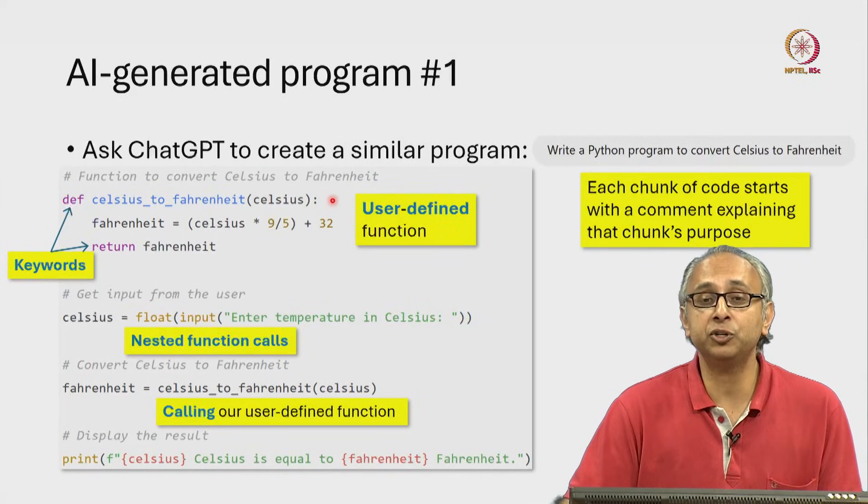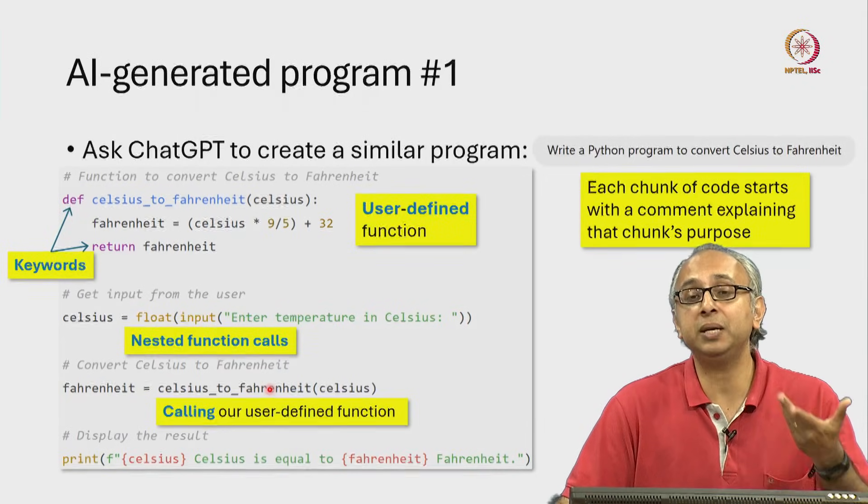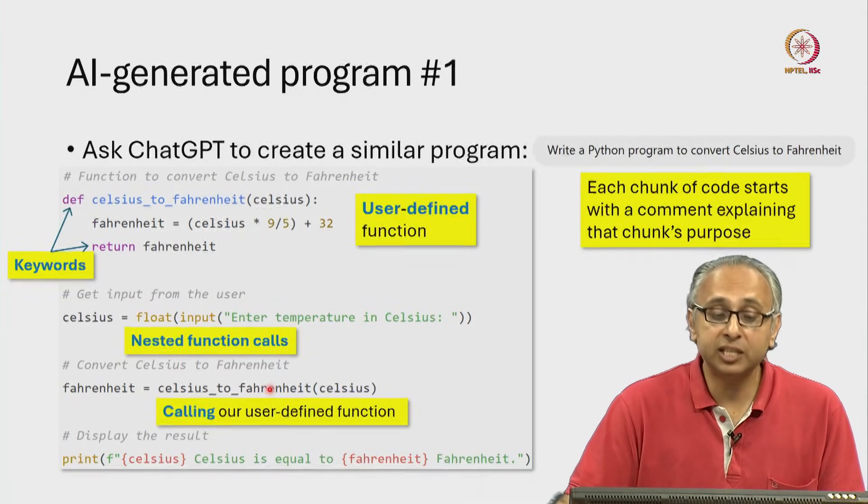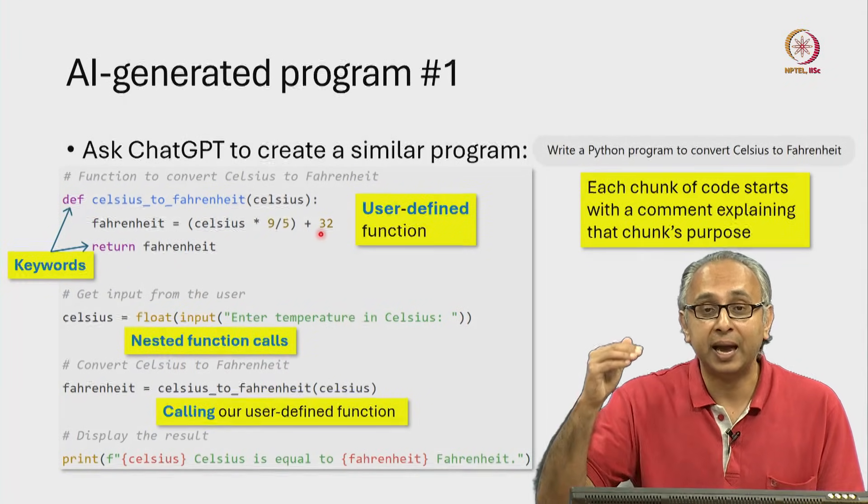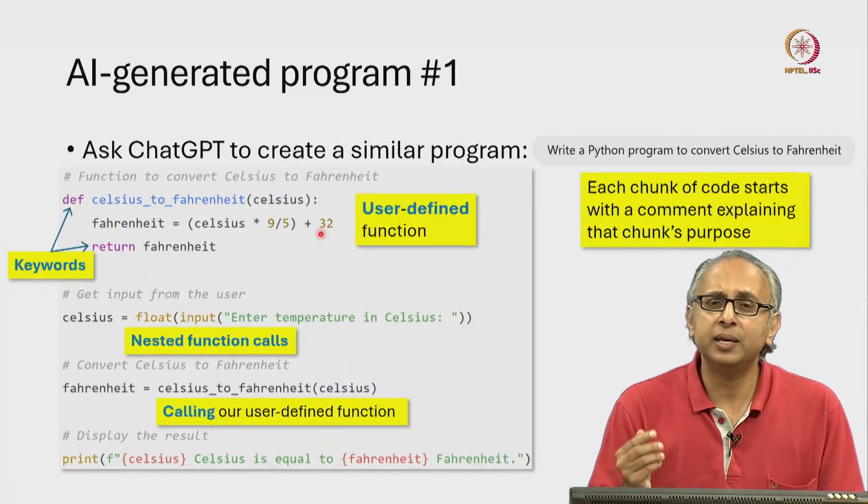we can call that function wherever we need to make that calculation, instead of repeating this logic at multiple points in our code. Why is this better?